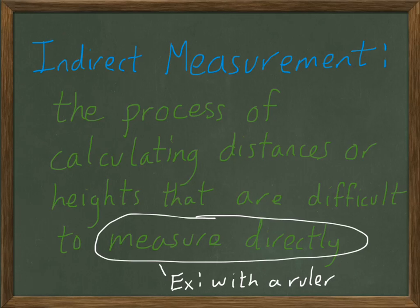For example, say you wanted to find the height of a tree or a building or something like that. Are you going to take a ruler or a yardstick and go stand up next to the building and figure out how tall that is? I'd like to see you try. So that becomes a lot more difficult. There's some distances that it's just not practical to measure directly. So that's where indirect measurement comes in.